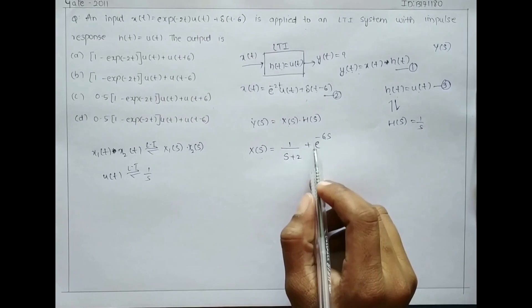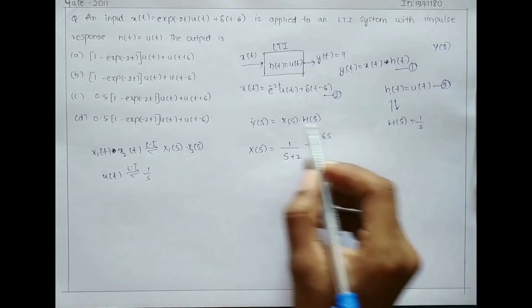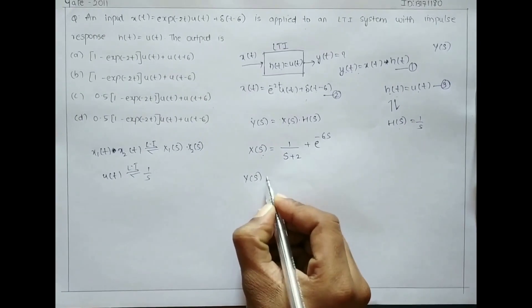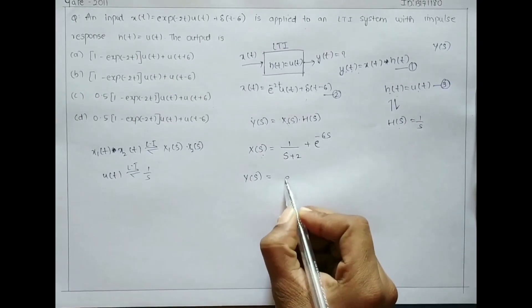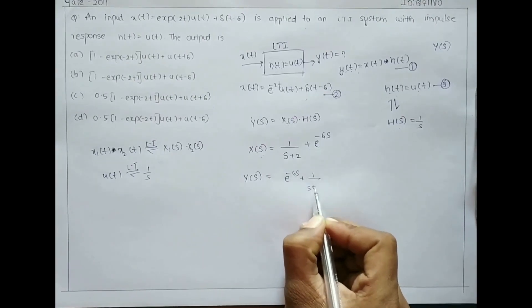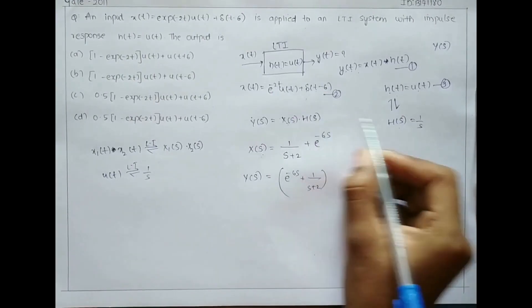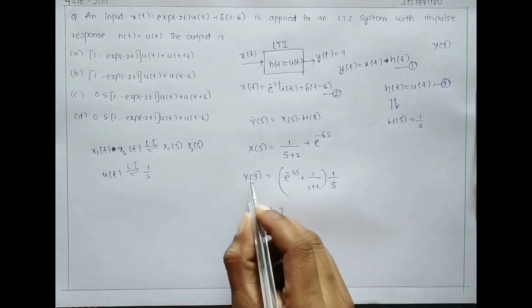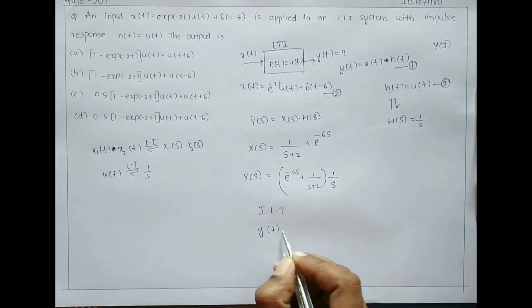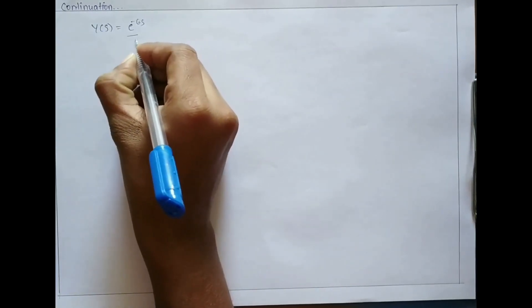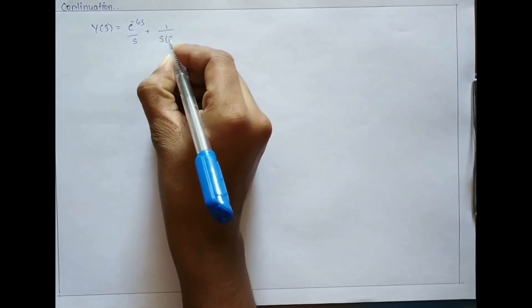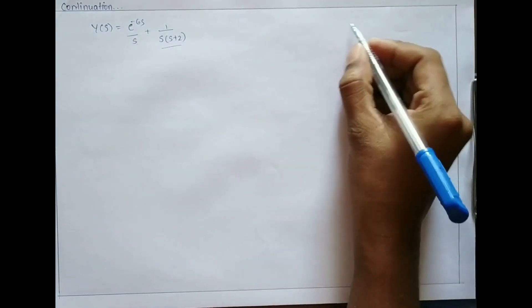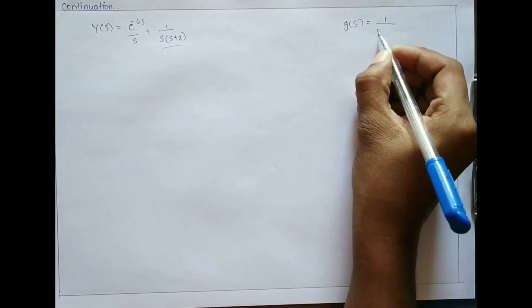Substituting X(s) and H(s) into Y(s): Y(s) equals [e to the power minus 6s plus 1 by (s plus 2)] into 1 by s. This gives Y(s) equals e to the power minus 6s by s plus 1 by [s(s plus 2)]. Let G(s) equal 1 by [s(s plus 2)].